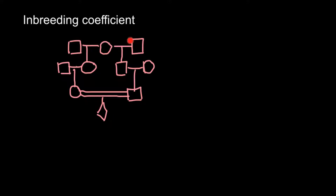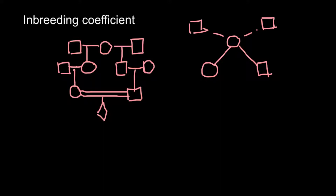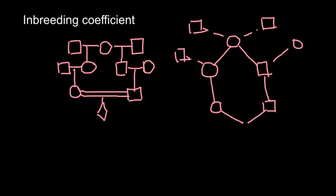Now let's rearrange this pedigree into a line diagram, which will be much more convenient. We have the female on top, and we know that this female has two children: a female and a male. We can also place the two mates on each side. This rearranged diagram will be much easier to work with, and this final individual here is of unspecified sex.